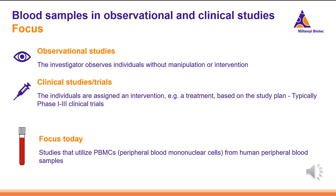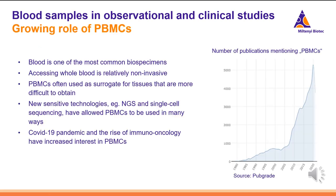So why are we so interested in blood? We see the role of PBMCs growing and becoming much more important in the future. Blood is one of the most common biospecimens in studies, because accessing whole blood is relatively non-invasive compared to other tissues like punch-outs or tumor tissue. Because of this, PBMCs are often used as a surrogate for tissues that are difficult to obtain. New sensitive technologies — for example, next-gen sequencing and single-cell sequencing — have allowed PBMCs to be used in many new ways. And recent events, such as the COVID-19 pandemic and the rise of immuno-oncology as a way to treat cancer, have brought immunology to the foreground and increased interest in PBMCs.